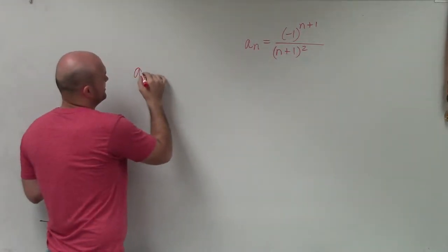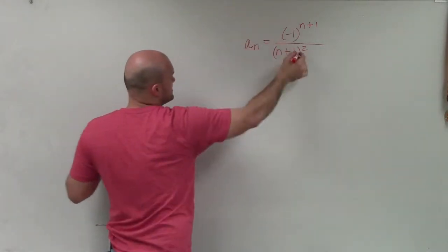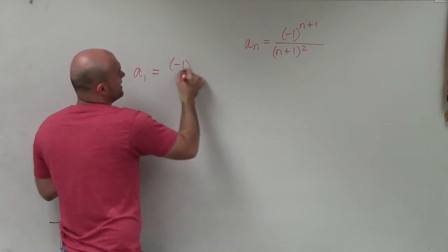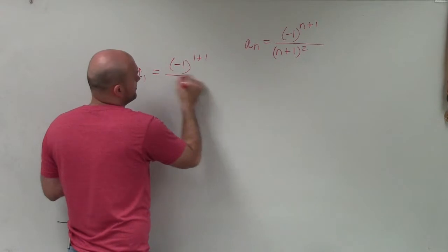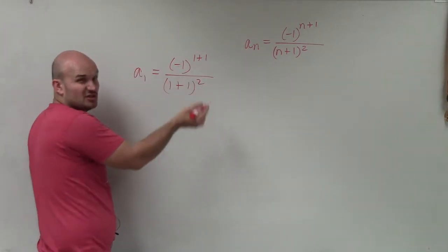So we want to find the first five terms. So what they're asking us is to determine a sub 1. So just like you can see n is representing the equation, if I have a sub 1, I am now going to replace my n's with 1. So I have negative 1 times 1 plus 1 all over 1 plus 1 squared. Do you see how I put the 1's in for the n?